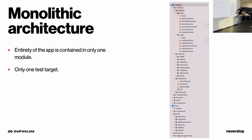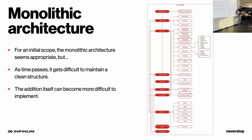So what is a monolithic architecture? Well, it's basically when you have the entirety of the application contained in only one module. Also something that is common for monoliths is that they have only one test target. What's the problem with monolithic architecture? For the initial scope, nothing — it seems quite appropriate and the architecture seems really fine. But as time passes, it can get really difficult to maintain that clean structure. Additions to the project can be really hard to implement. Here's an example of one of our production projects before we modularized it — this is the state when it was a monolith. As you can see, there's a ton of modules and a ton of dependencies between them, some of which are even circular, which can cause issues in the future.